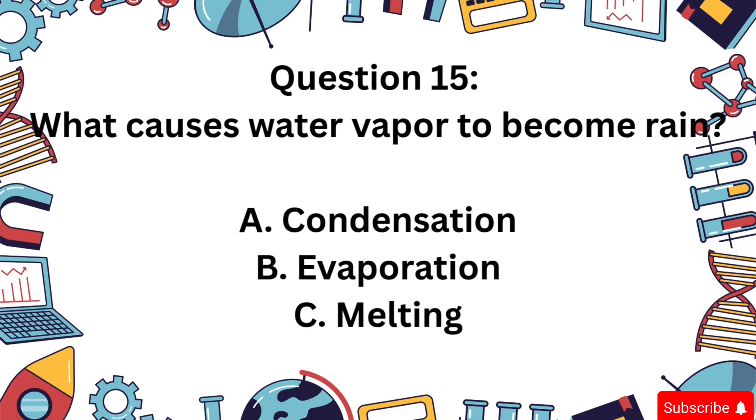Question 15: What causes water vapor to become rain? Is it A) Condensation, B) Evaporation, or C) Melting? The correct answer is A. Condensation turns gas back to liquid. In clouds, water vapor cools and becomes rain.